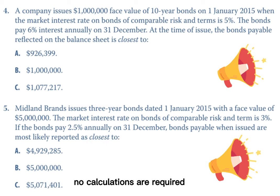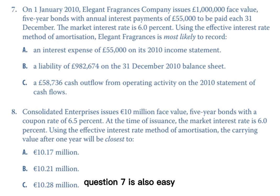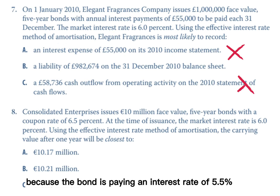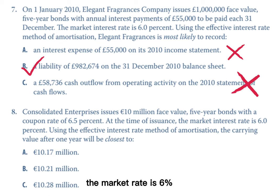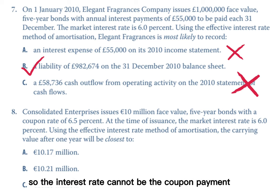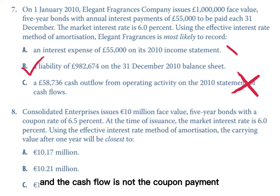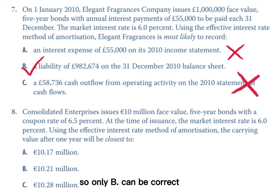No calculations are required. Question seven is also easy because the bond is paying an interest rate of 5.5% and the market rate is 6%, so it's issued at a discount. The interest expense cannot be the coupon payment and the cash flow is not the coupon payment, so only answer B can be correct.